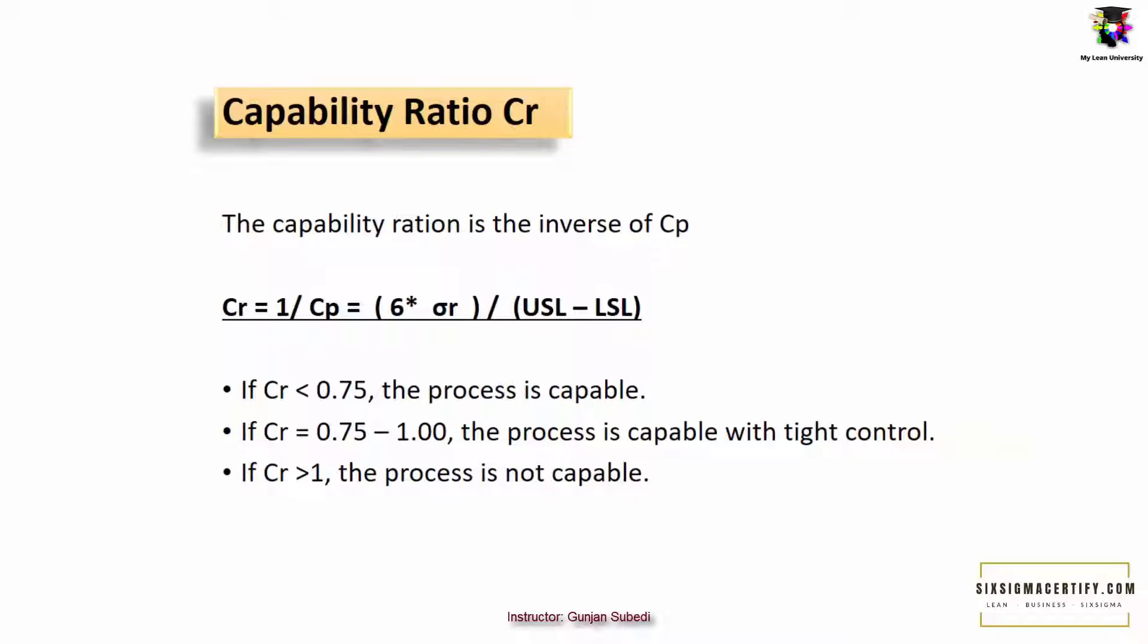There is another term called capability ratio or Cr. The capability ratio is the inverse of Cp or 1 by Cp. So if we inverse this formula of Cp, we get capability ratio or Cr equals six times sigma divided by upper control limit minus lower control limit. If the capability ratio is less than 0.75, we say that the process is capable of generating goods or producing the outputs as per the specification. If the capability ratio is between 0.75 to 1, we say that the process is capable with tight control. And if the capability ratio or Cr is greater than 1, we say that the process is not capable.